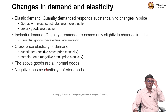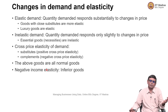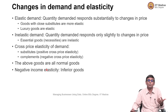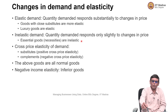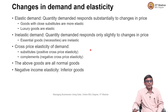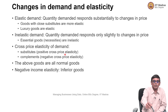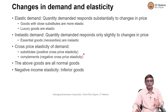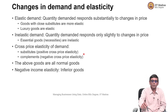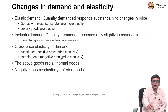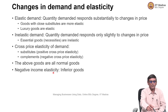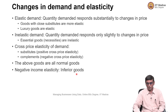Then there are demands which are inelastic, which means the quantity does not change much. Essentials — for example, if you have a medicine you need, you do not look at whether it costs 50 rupees or 100 rupees if that medicine makes the difference between life and death. Similarly, if you are very hungry, you will be willing to pay a bit more. There is also the idea of cross-price elasticity of demand: substitutes show positive cross-price elasticity, and complements show negative cross-price elasticity. Negative income elasticity applies to inferior goods.